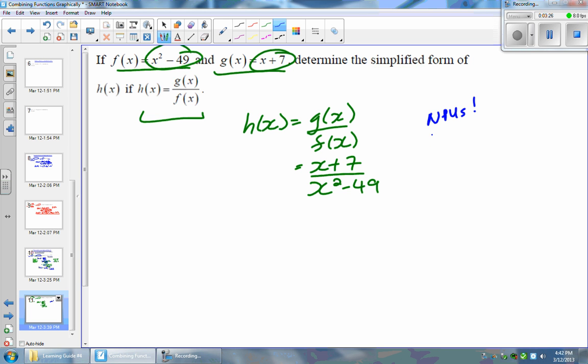Okay, so the NPVs for any rational function occurs when your denominator, which is x squared minus 49, is equal to 0. So when we solve for x here, we're going to get x squared is equal to positive 49. When I take the square root, I have to consider the fact that it's the plus or minus square root.